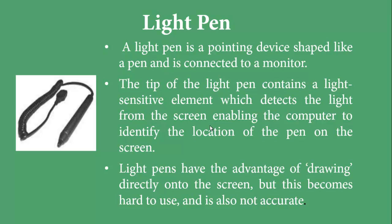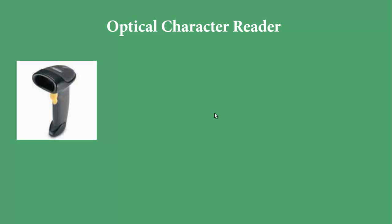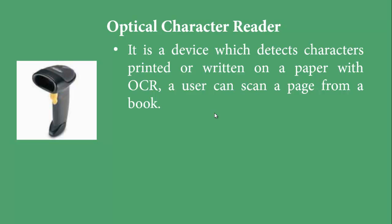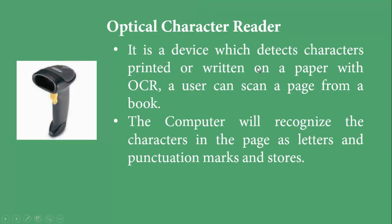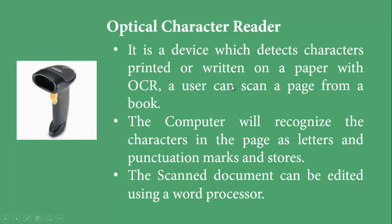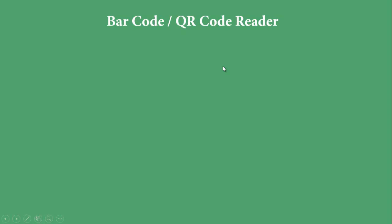The optical character reader (OCR) is a device that detects characters printed or written on paper. It scans pages from books or documents, and the computer recognizes the characters as letters and punctuation marks, stores them, and the scanned document can then be edited using a word processor.